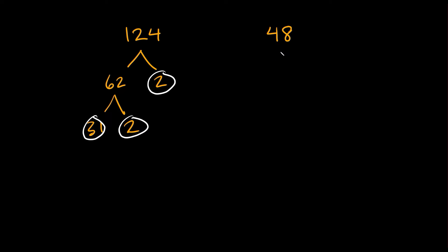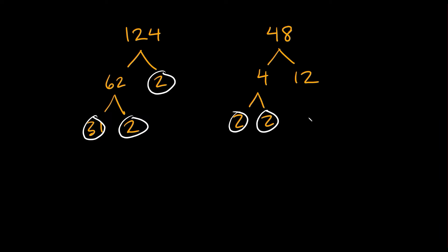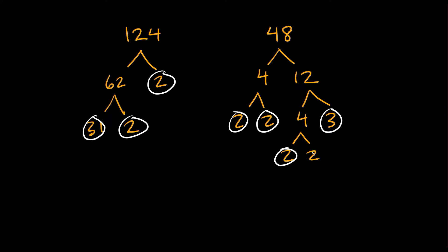Now let's do it with 48. We can break 48 down into 4 times 12. These are not prime numbers so we can break both of them down. 4 breaks down into 2 times 2 — both prime. And 12 breaks down into 4 times 3. 3 is prime, so circle that. Then 4 breaks down again into 2 times 2 — those are our last two prime numbers.